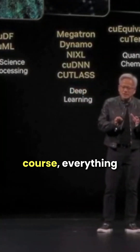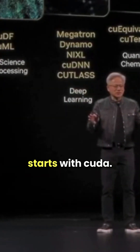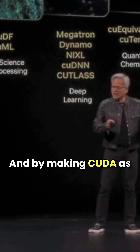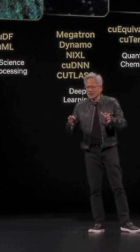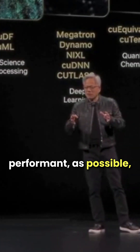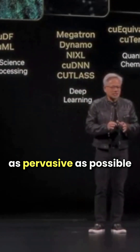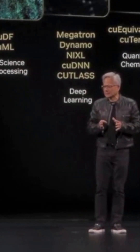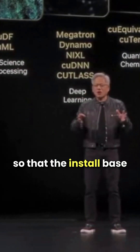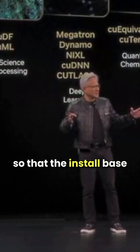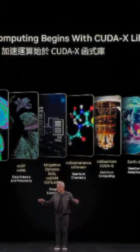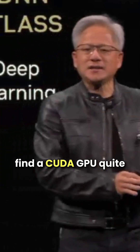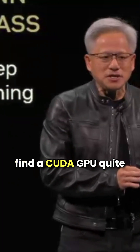At the core, everything starts with CUDA — making CUDA as performant and as pervasive as possible, so that the install base is all over the world. Then applications can find a CUDA GPU quite easily.